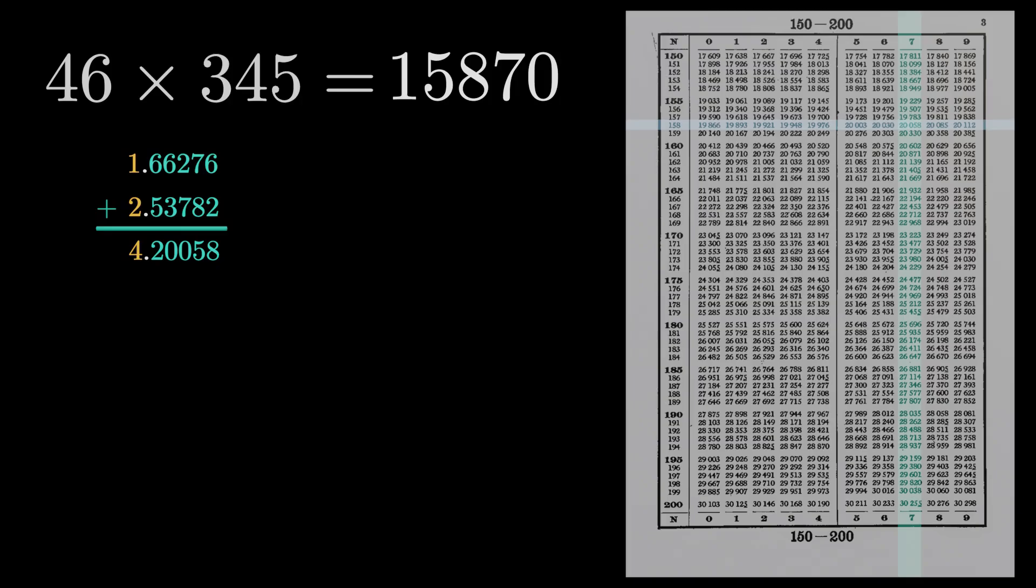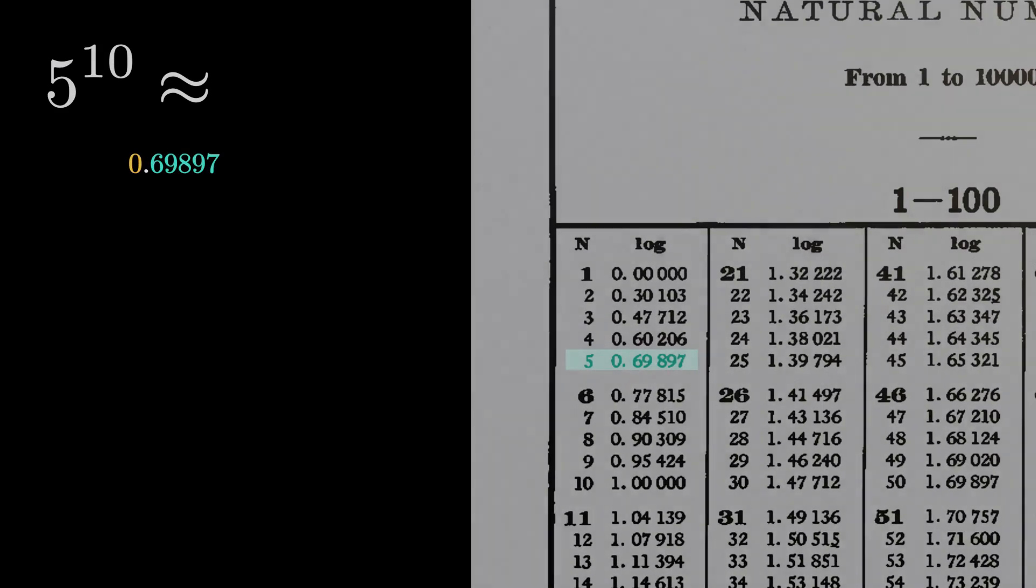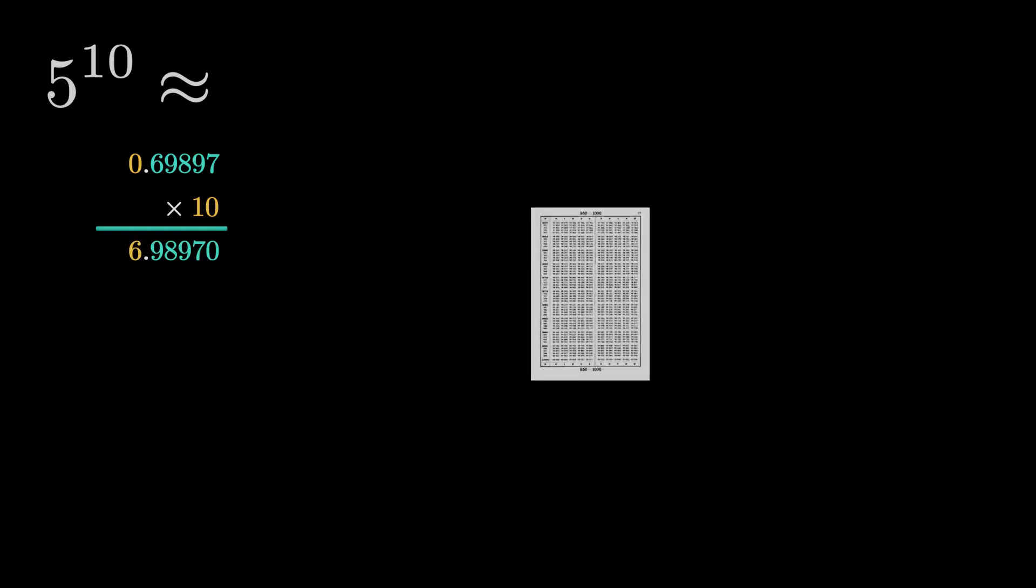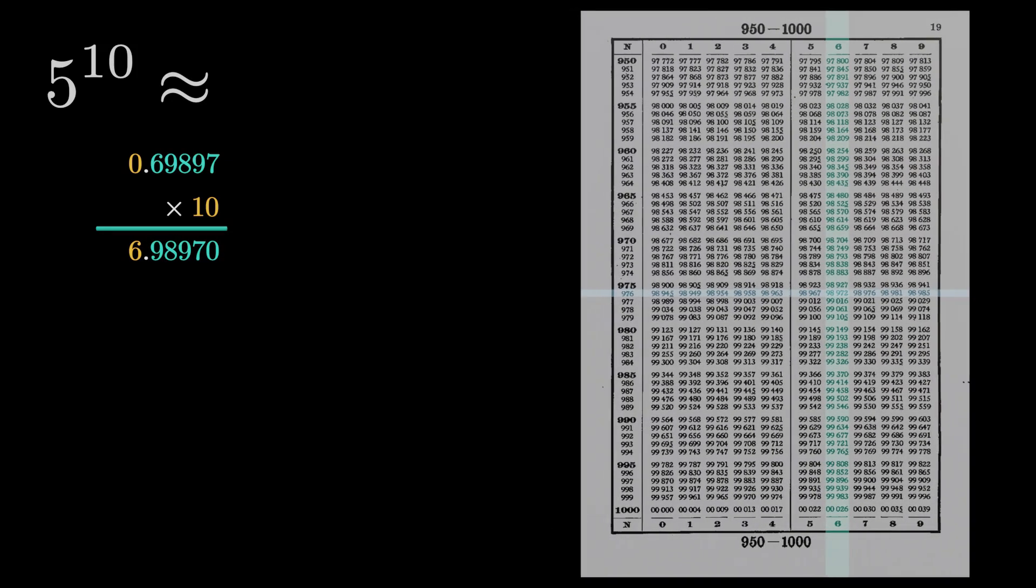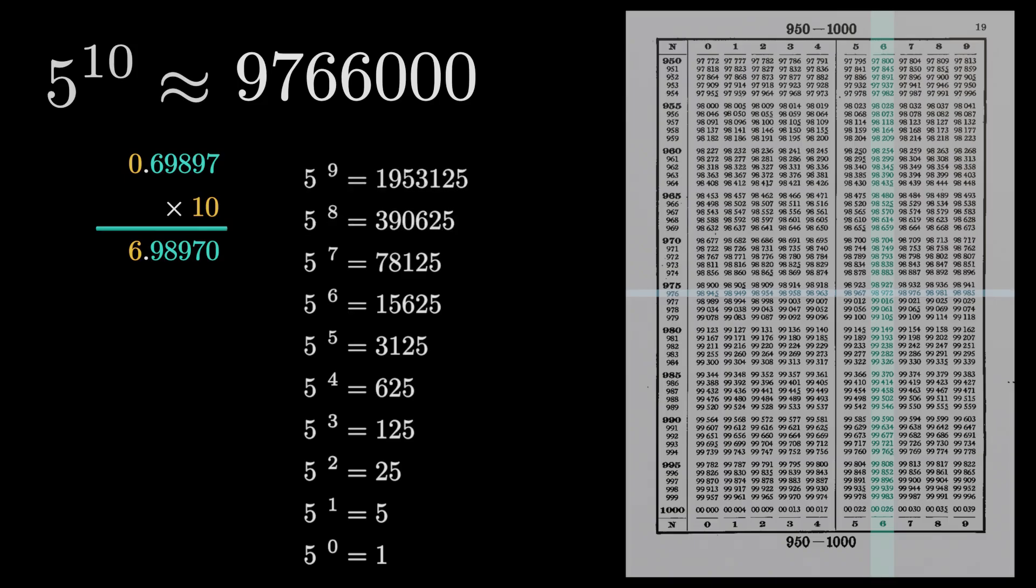We just multiplied two numbers by adding the corresponding logarithmic values. This sum just had to be converted back and the actual product is obtained. Similarly easy is the computation of powers. Let's say we want to compute 5 to the 10. We look up the logarithm of 5 and multiply it by 10. Again the mantissa of 6.9897 leads to the digits 9766. And we have to add zeros until we arrive at a number larger than 1,000,000. We find 9,766,000 which is decently close to the true value.